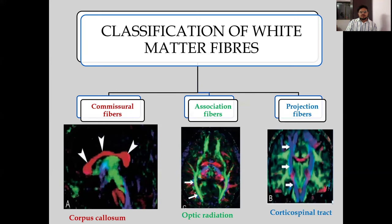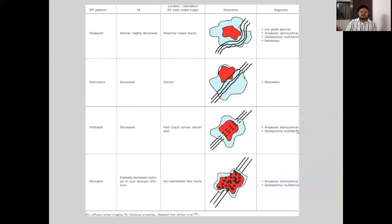White matter fibers can be classified as commissural, association, or projection. For example, the corpus callosum appears red on DTI. The optic radiation running anteroposteriorly is green, and the corticospinal tract running craniocaudally is blue.